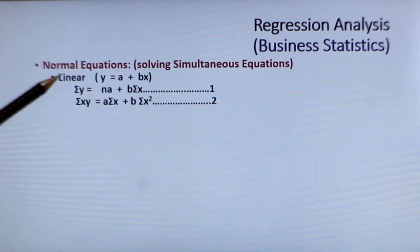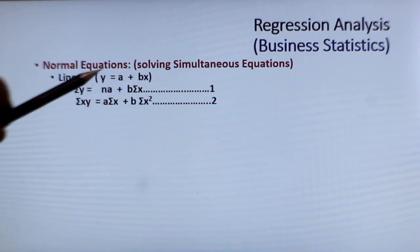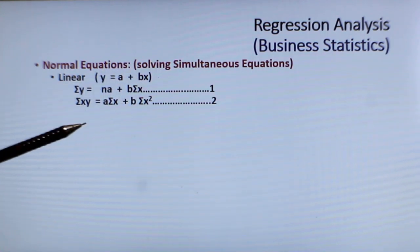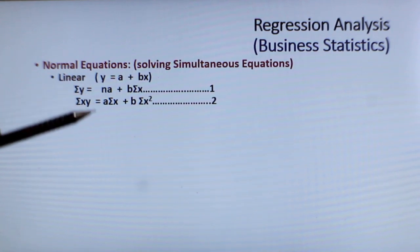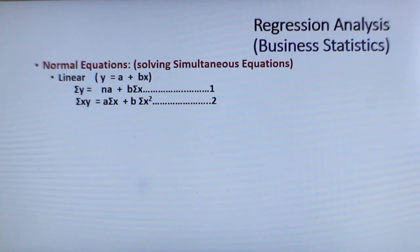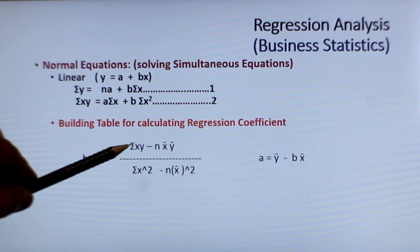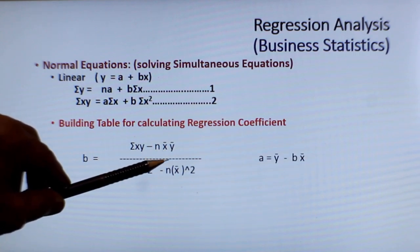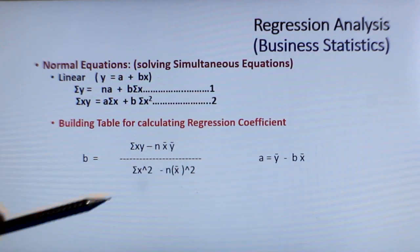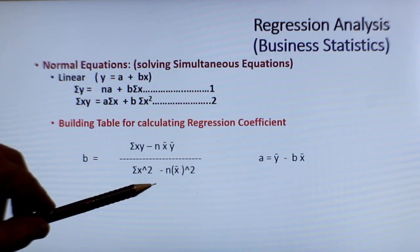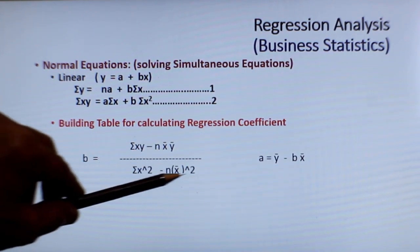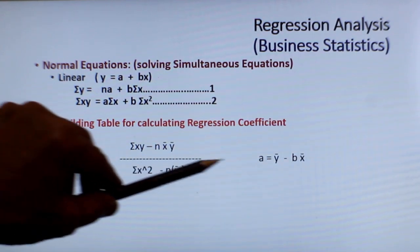Once you know that linear equations y equals a plus bx or y equals mx plus c, the same form is written in different parameters here. What happens is that they fall into two equations. Once you solve these two equations, they are simultaneous equations, then you will be in a position to get the value of a and b. You all know in mathematics, simultaneous equation for two variables, if two equations are there, you can arrive at the solution. Statistically, to evaluate or arrive at the regression coefficient, we need to build a table. The table is built with the help of these data. X and Y are the data, and X bar and Y bar are the mean of the data. Once you are able to establish all these things by way of a table, we will be in a position to arrive at various parameters A and B.